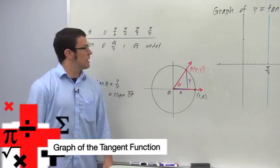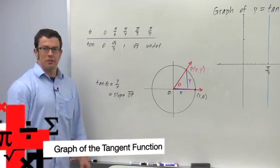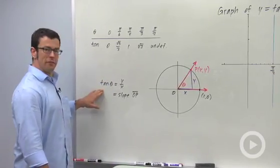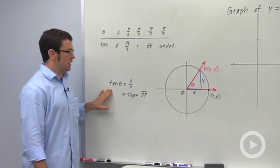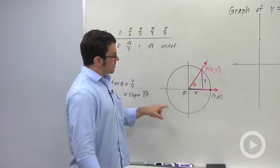I want to graph the tangent function. I have a table of values written here and the definition of the tangent function of the unit circle here. Now here's the unit circle.